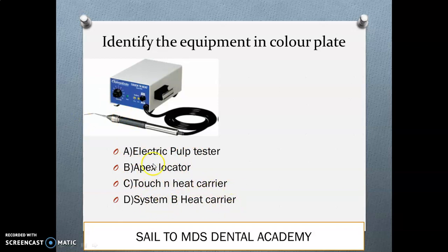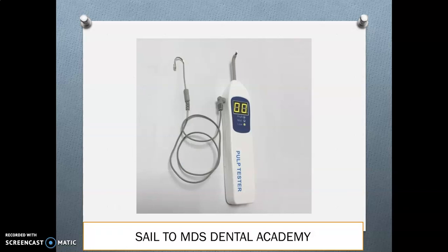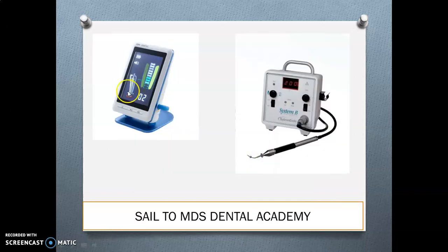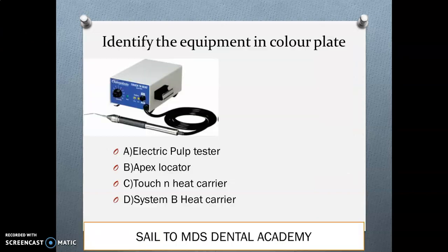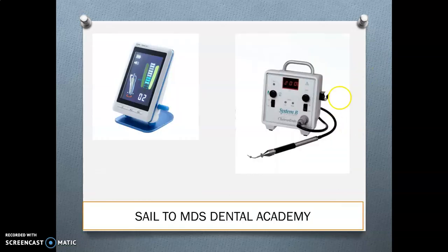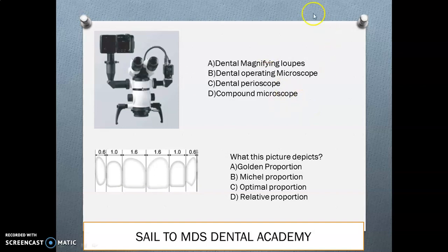Options A and B can be ruled out, but there is confusion between option C and D. The correct answer is the touch and heat carrier. Both the touch and heat carrier and the System B heat carrier are used for vertical compaction of gutta-percha. Whenever studying image-based questions, check the pictures of all four options. The electric pulp tester, apex locator, and System B heat carrier each look distinct.